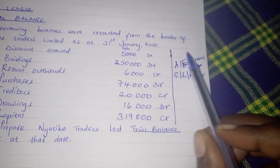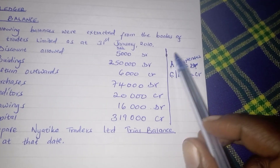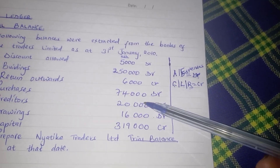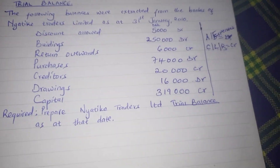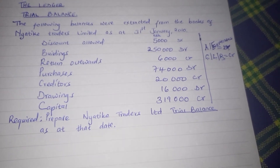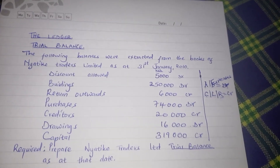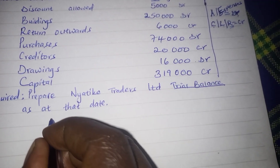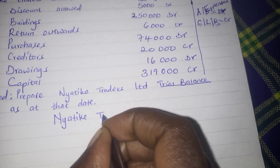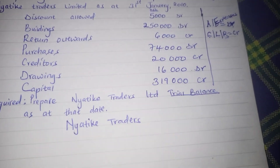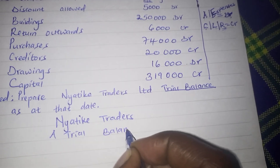This information comes from when you're learning how to prepare or open ledger accounts, and it's the same knowledge you use here when given this type of question. When preparing a trial balance, first and foremost we need to start with the heading. The heading starts with the name of the business — in this case, Nyatika Traders. The account we are preparing is a trial balance.